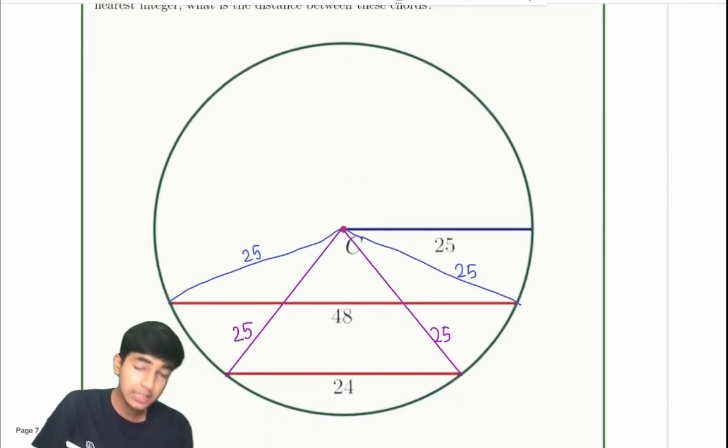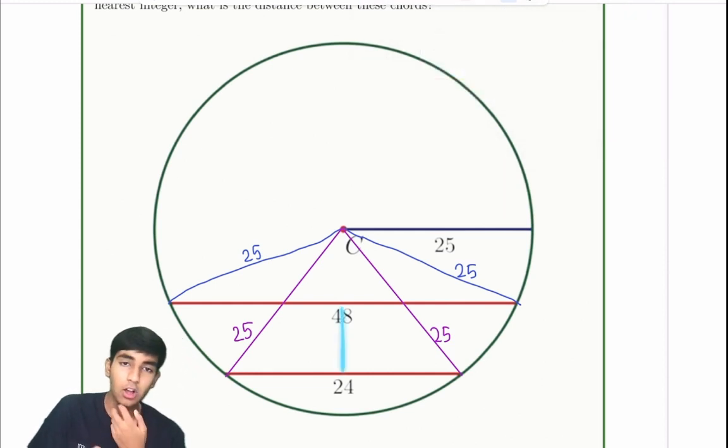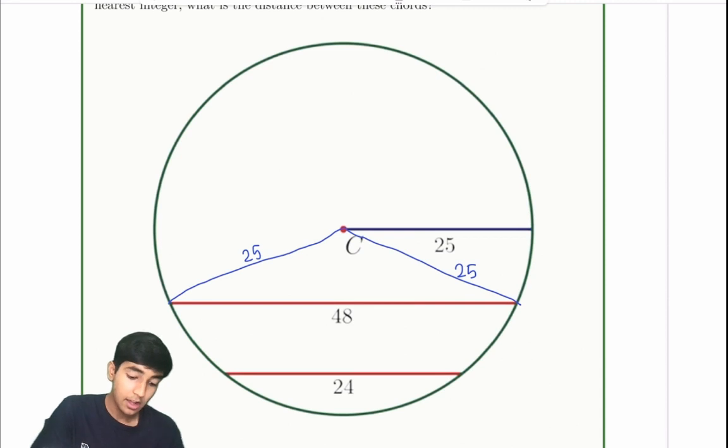So essentially, we're trying to find the distance between these chords. How do we find this distance? So if we're trying to find this distance, a strategy we can try and do is try to use the information we're provided. This 48, this 24, how can it even help us? So for now, I'm going to erase this so we can focus on this triangle here. 25, 25, 48. When you're stuck on a problem, geometry especially, look for the information we have not used yet. This 48 condition is one of them. 48, 25, 25. That's an isosceles triangle, isn't it?